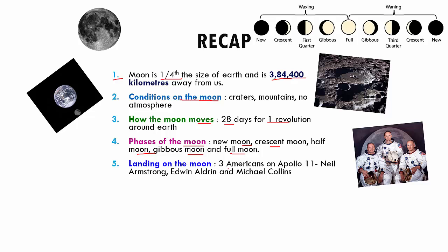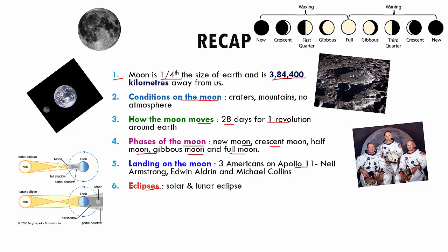Then we spoke about three American men who landed on the moon through the spacecraft Apollo 11 — they were Neil Armstrong, Edwin Aldrin, and Michael Collins. Then we spoke about eclipses, where the earth and the moon cast shadows on each other because of the sun's light. In a solar eclipse, the moon comes between the sun and the earth; in a lunar eclipse, the earth comes between the sun and the moon. We also spoke about total eclipse and partial eclipse.